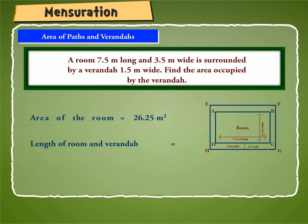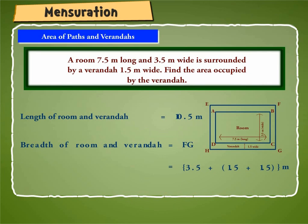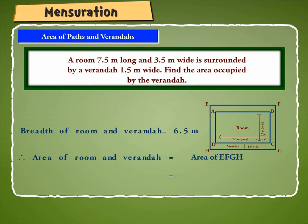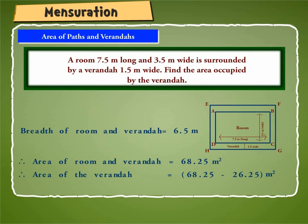Length of room and veranda is equal to EF is equal to 7.5 plus 1.5 plus 1.5 meter, or 10.5 meter. Breadth of room and veranda is equal to FG is equal to 3.5 plus 1.5 plus 1.5 meter, or 6.5 meter. Therefore, area of room and veranda is equal to area of EFGH is equal to 10.5 into 6.5 square meter, or 68.25 square meter. Therefore, area of the veranda is equal to 68.25 minus 26.25 square meter, which is equal to 42 square meter.